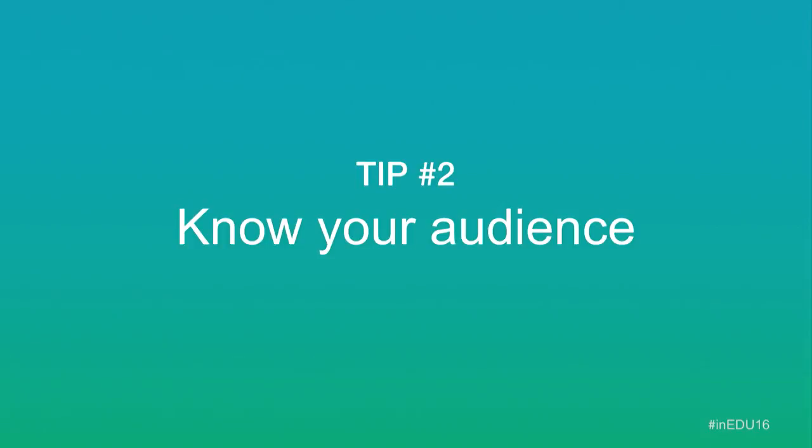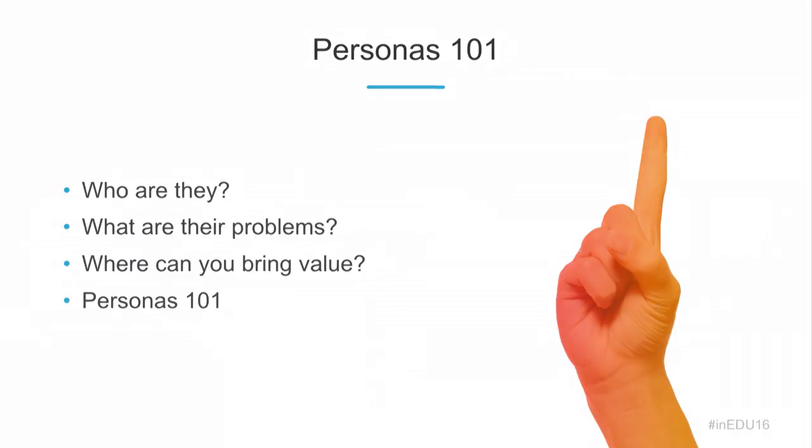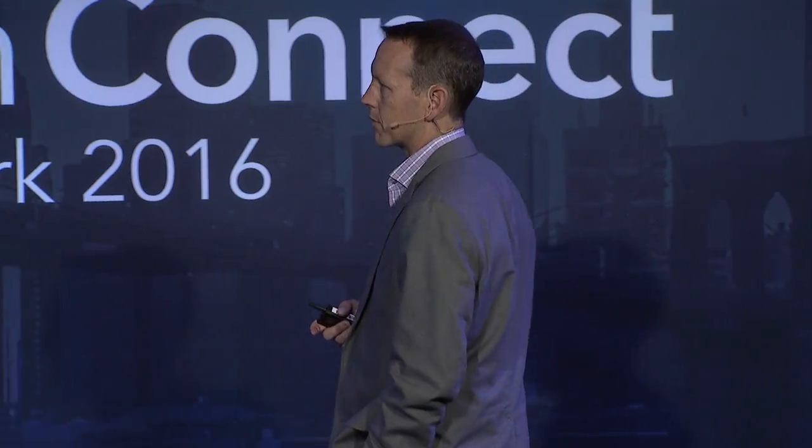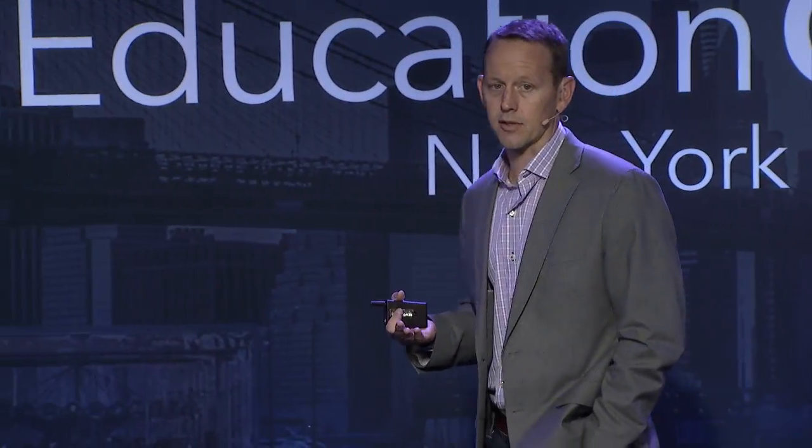Tip number two: knowing your audience. I know that's marketing 101, but I'm shocked by the number of companies we walk into where we ask for their personas and they say 'it's students' — that's not enough to target your content. The other main thing that's missing is documenting them. Less than half the companies we've talked to have actually sat down and written out their personas with specifics on who they are, what their problems are, and what value you can bring to them — because that ultimately informs your content strategy.